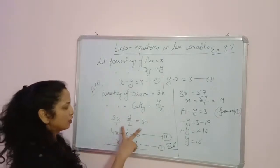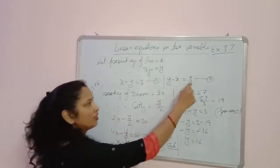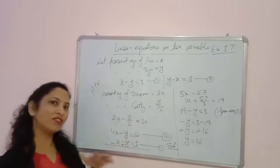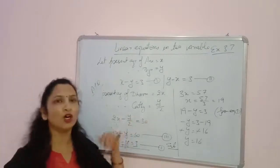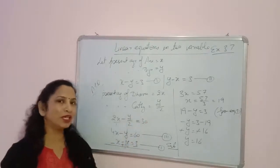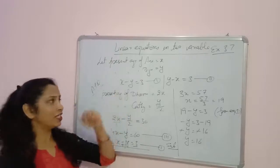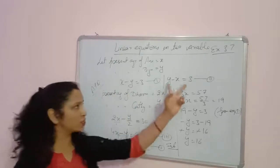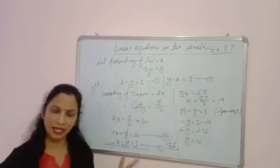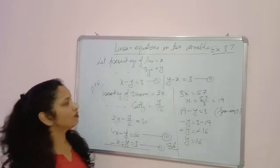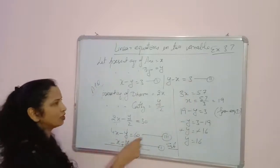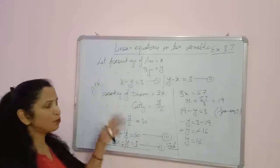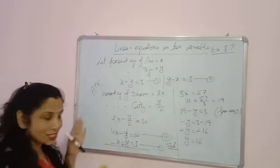Now we solve equation 3 with equation 2, since we don't know which is bigger — Ani or Biju. We must take both conditions. Now we will solve equation 3 with equation 2. I need to erase the board as there is very little space.